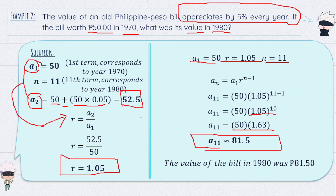The value of the bill in 1980 was 81.50 pesos. That's all for example number 2.